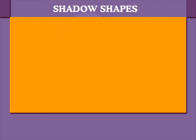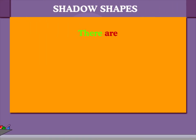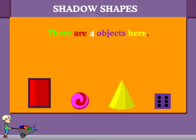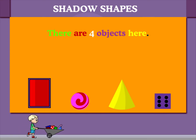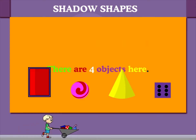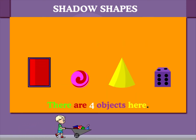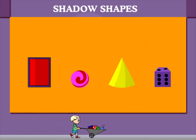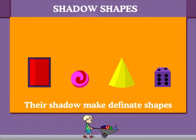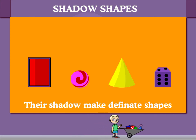Shadow shapes. There are four objects here. Each has a particular shape. This shape can be best seen by the shadow of the object against torchlight.